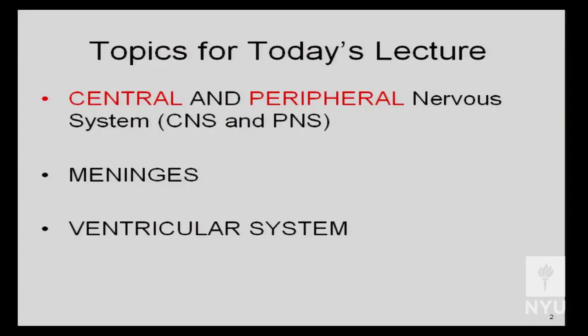Let's get started with today's lecture on the organization of the brain and nervous system. What we're going to be going over today are the major components of the nervous system. There are two major components: the central nervous system and the peripheral nervous system, abbreviated as CNS and PNS.